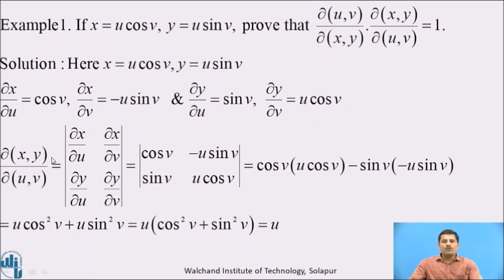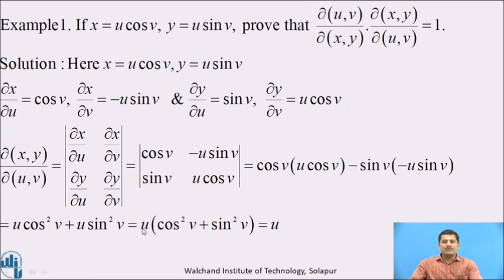By the definition, Jacobian of xy with respect to uv is the 2×2 determinant. Substituting all these partial derivatives, we evaluate: cos(v)·(u·cos(v)) − (−sin(v))·(−u·sin(v)) = u·cos²(v) + u·sin²(v). Taking u common gives u·(cos²(v) + sin²(v)) = u·1 = u. Therefore the Jacobian of xy with respect to uv equals u.